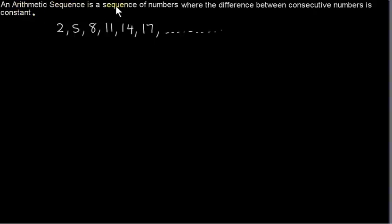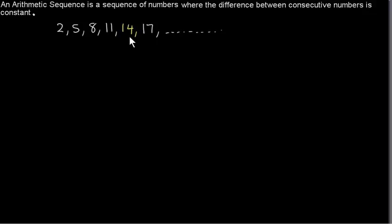An arithmetic sequence is a sequence of numbers where the difference between consecutive numbers is constant. So if you look at this arithmetic sequence, the sequence is just a set of numbers separated by commas. If we take any two consecutive terms, we'll find that the difference between them is 3. You can see that 5 minus 2 is 3, 8 minus 5 is 3, 11 minus 8 is 3, and so on.